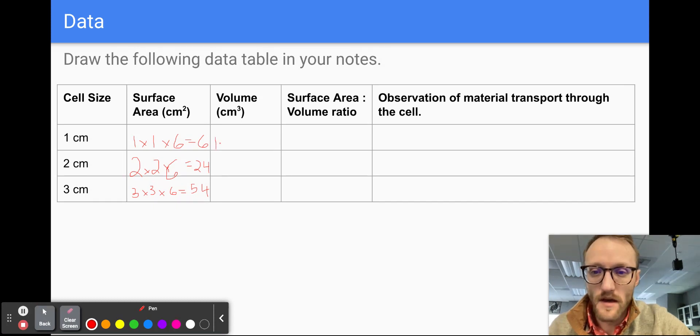So for our one centimeter cube, we're going to go one because we know that's base times, oh, that's supposed to be a times sign. There we go. One times one times one. Oh, that looks like a V. Hot diggity. So one times one times one is still one. So we have a volume of one cubic centimeter. Go ahead and pause the video and do the same thing for our other two cubes.